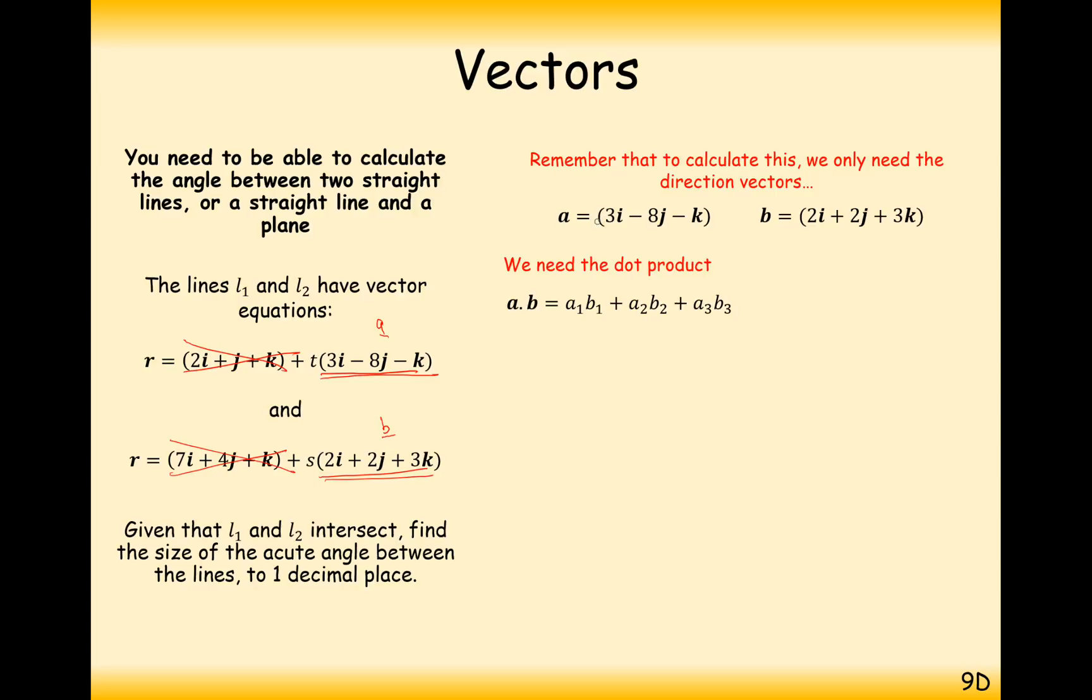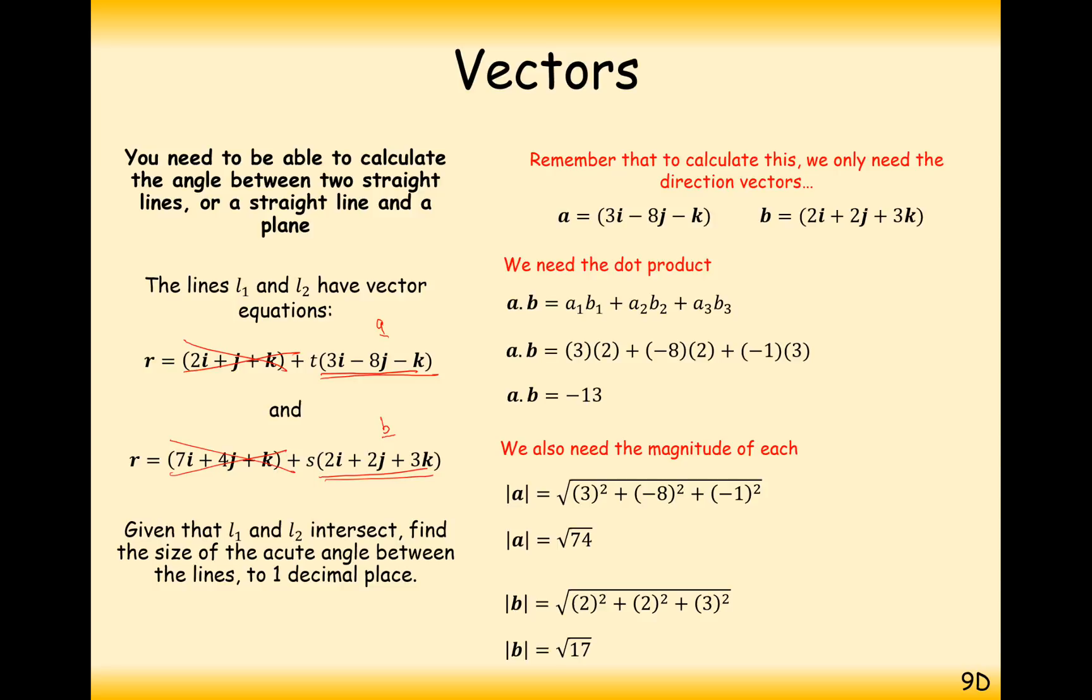In this rule here, we're going to use A dot B. A dot B is the x components times together, the y components times together, and the z components times together. Add all of those results together and we get minus 13. Now we need to find the magnitude of each of those vectors: square root of 74 and square root of 17.